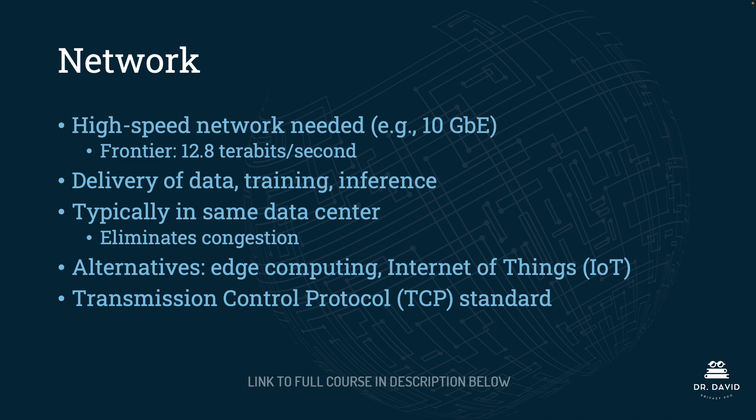With regards to network, a high-speed network is needed for training your algorithm. The bare minimum that should be considered is a 10 gigabit ethernet connection. Frontier, the supercomputer we looked at in the previous lecture, transfers data at 12.8 terabits per second, which is lightning speed.